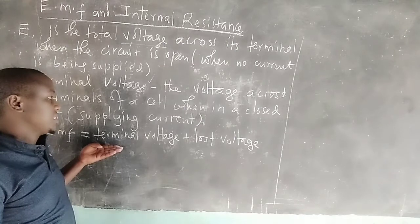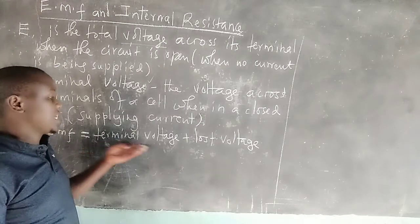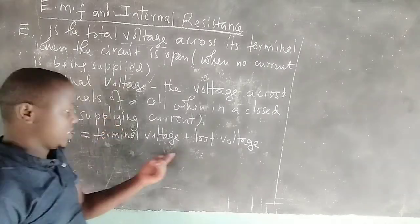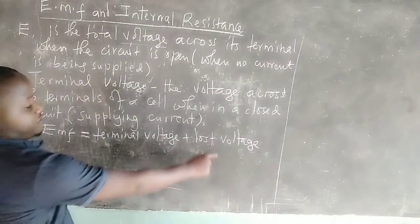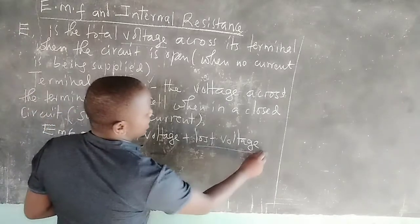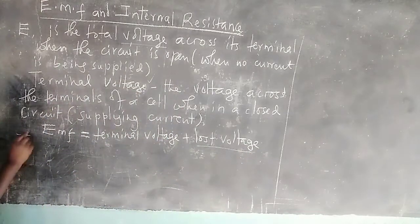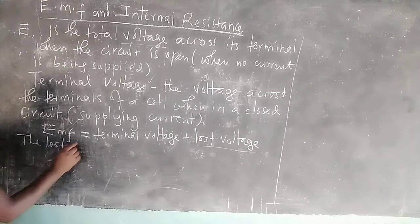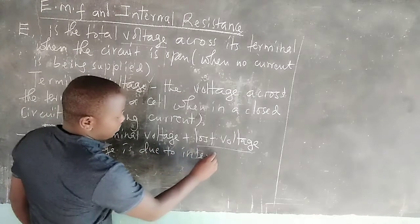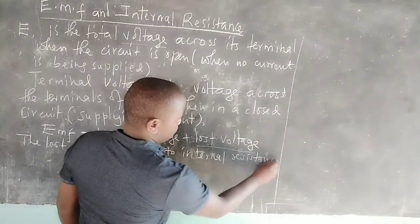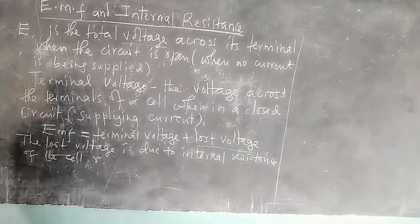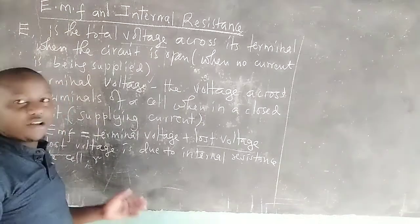When the cell starts supplying current, what reads across the cell is the terminal voltage, which is something lower than the EMF, meaning there is a lost voltage. The lost voltage plus the terminal voltage gives us the total EMF of the cell. It is important to mention that the lost voltage is due to what we call internal resistance of the cell.